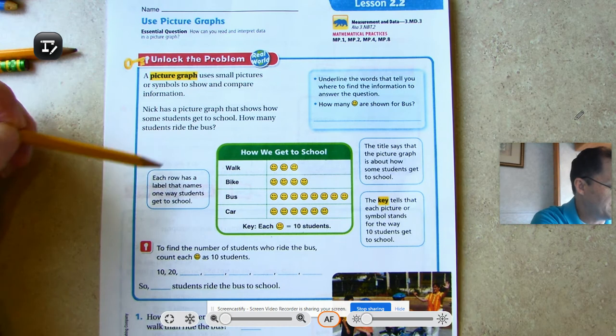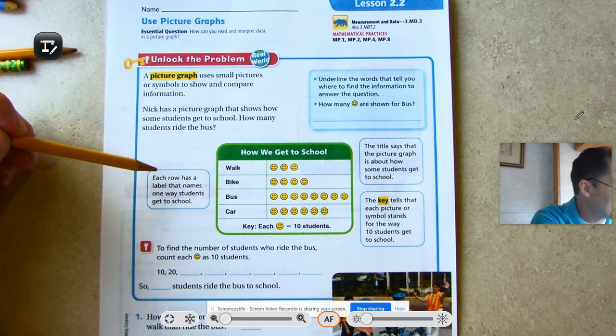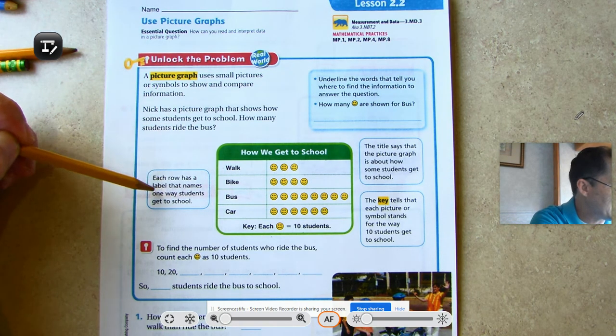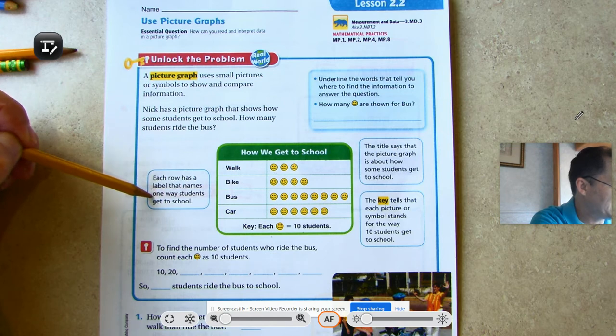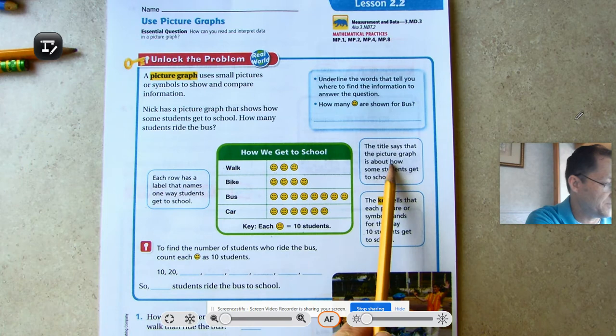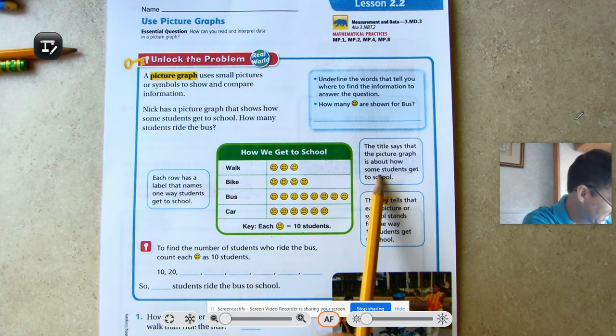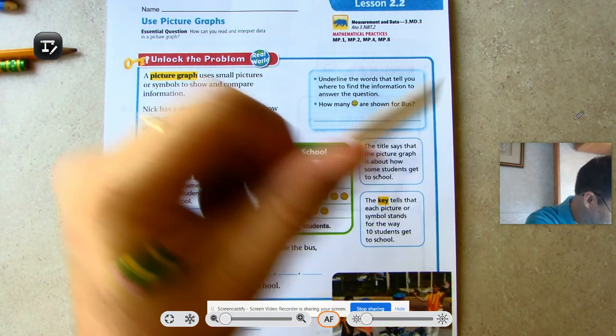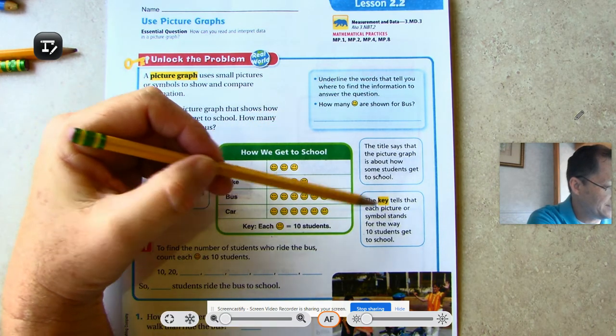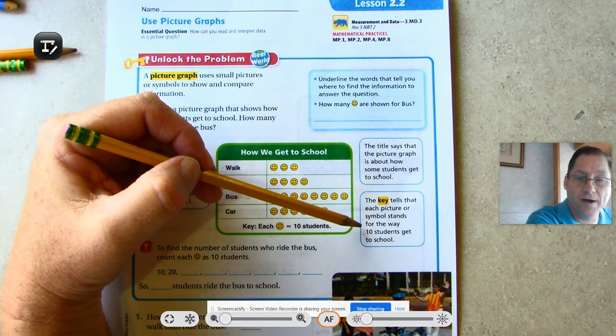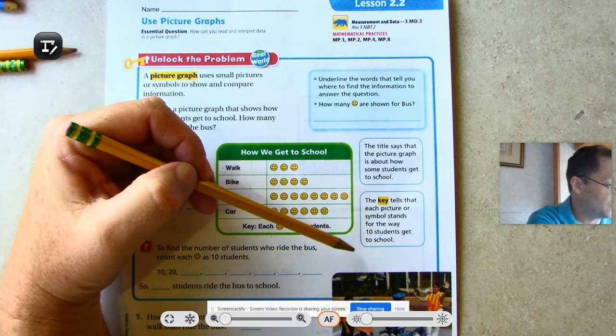Each row has a label that means one way students get to school. The title says that the picture graph is about how some students get to school. And the key tells that each picture or symbol stands for the way 10 students get to school.